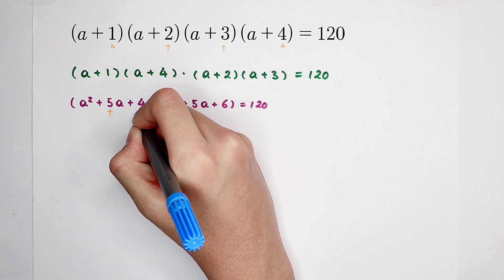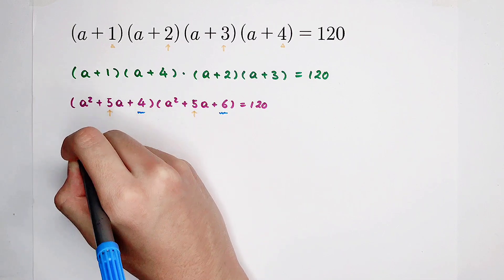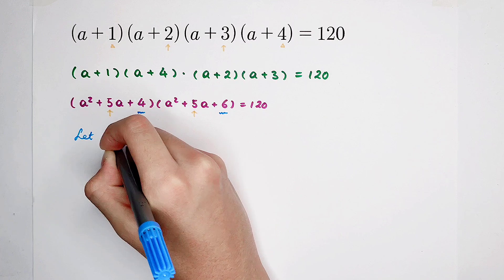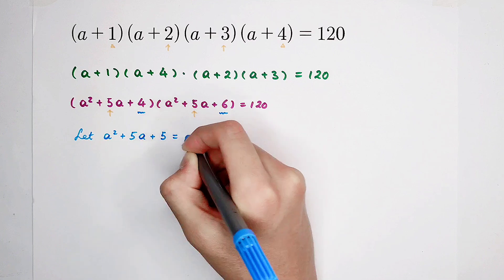Look, here is 4. Here is 6. So now, we can substitute. We can let a squared plus 5a plus 5 be equal to t.